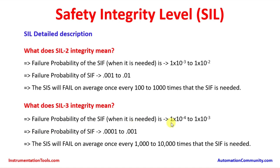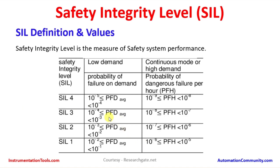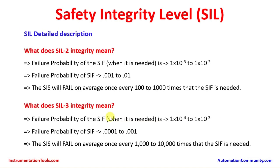For SIL 3 integrity, the range is 1×10⁻⁴ to 1×10⁻³, as shown in the table. The failure probability is 0.0001 to 0.001. The SIS will fail on average once every 1000 to 10,000 times — meaning for every 1000 to 10,000 demands, there is a probability of one failure. That is known as SIL 3.